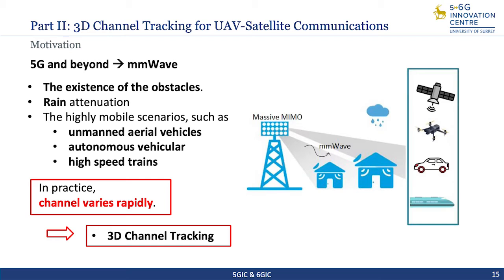Due to the Doppler effect caused by the mobility of users in highly mobile applications such as UAVs, high-speed trains, and autonomous vehicles, the millimeter-wave channel is changing rapidly. Because of the existence of obstacles and the shadowing effect, there can be significant fluctuation of the path loss. Hence, it is a key challenge to track dynamic channel information. In practice, fast-changing channels require 3D channel tracking.